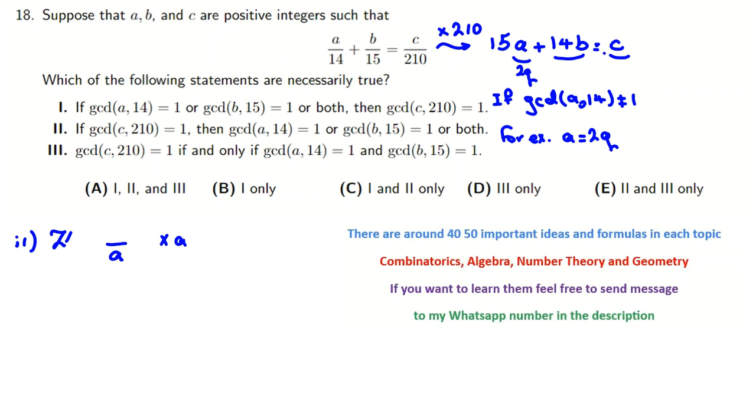If GCD of C and 210 is 1, if and only if GCD of A and 14 is 1. Because if GCD of A and 14 is not 1, then we have problem, like this. For example, A is even, then A is 2Q, B 2Q, then C is 2Q. So, also B and 15, 1. If we have these things, again, we have same thing.